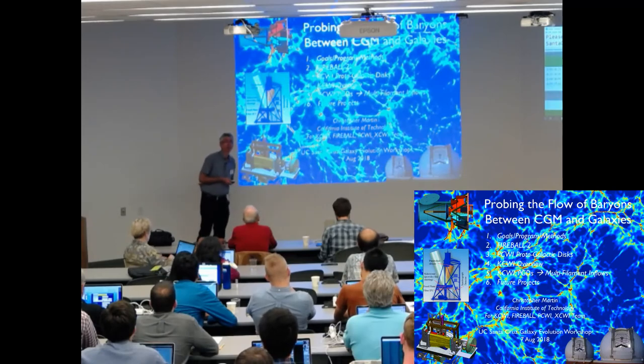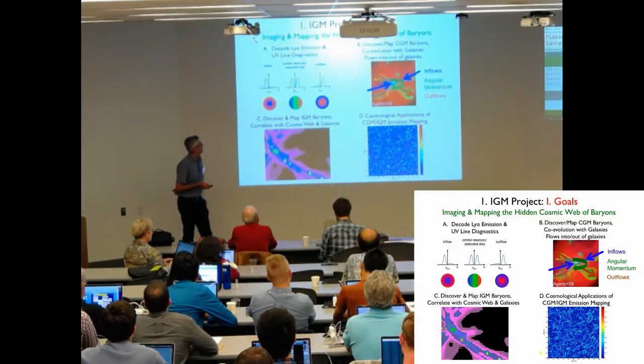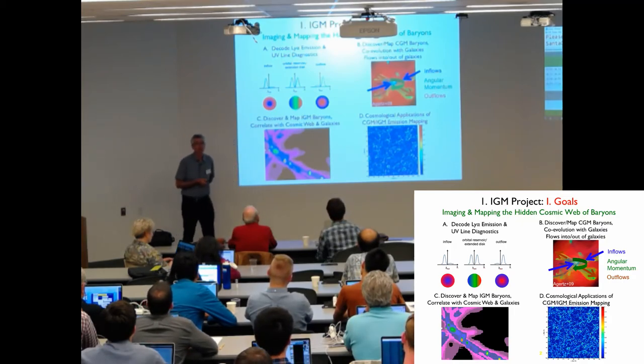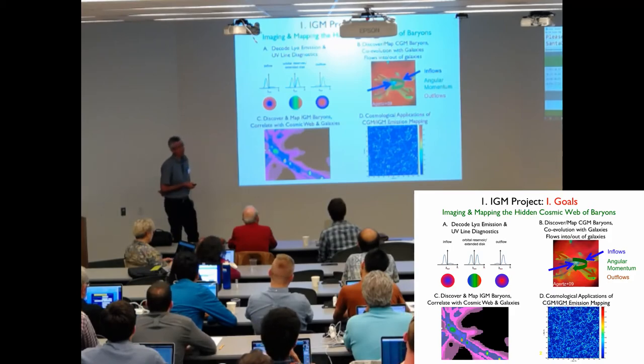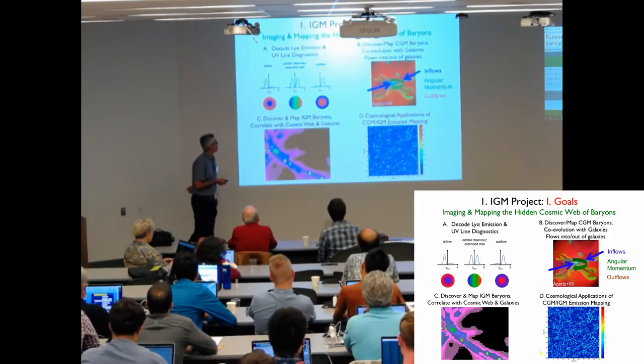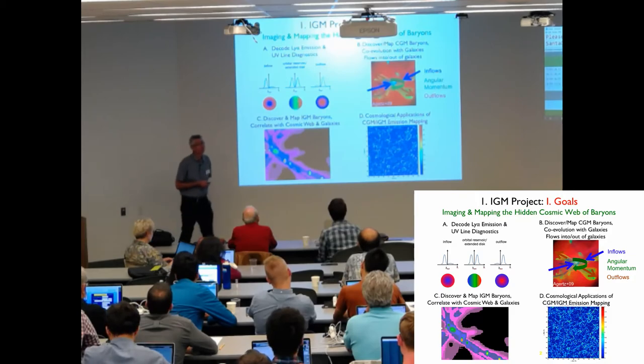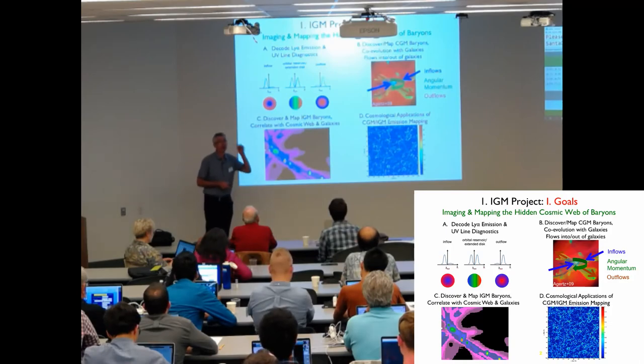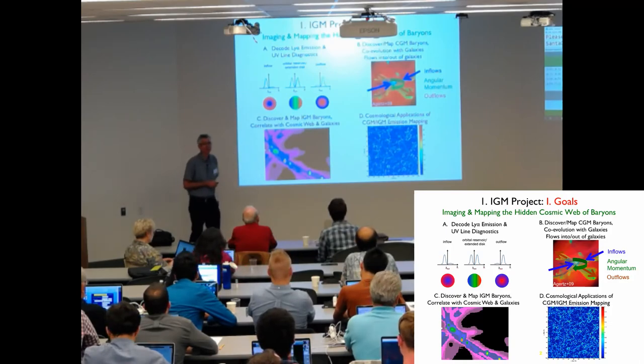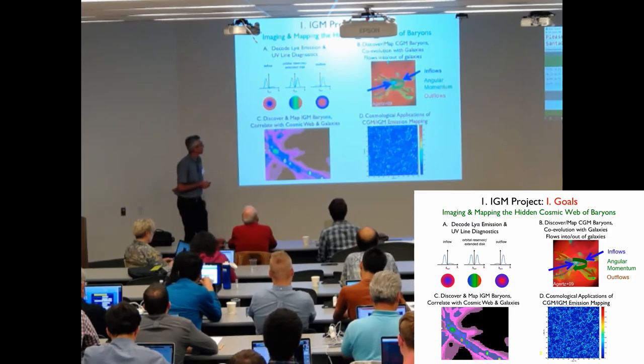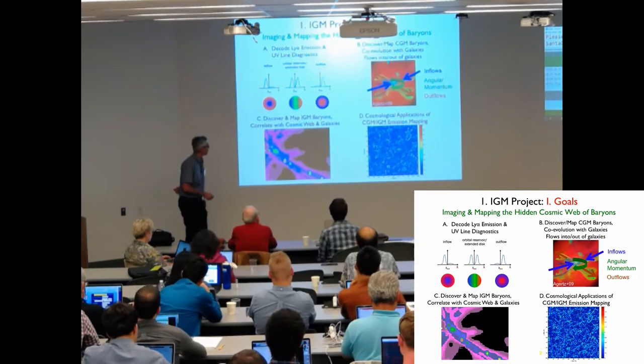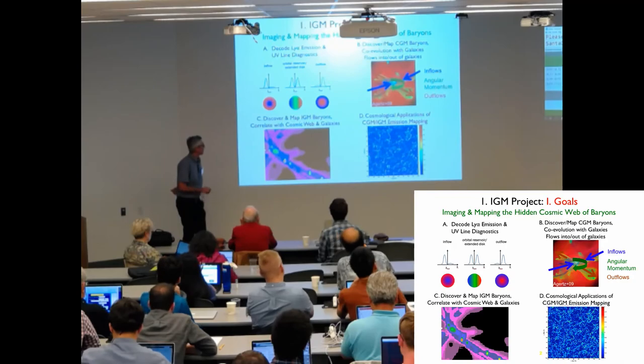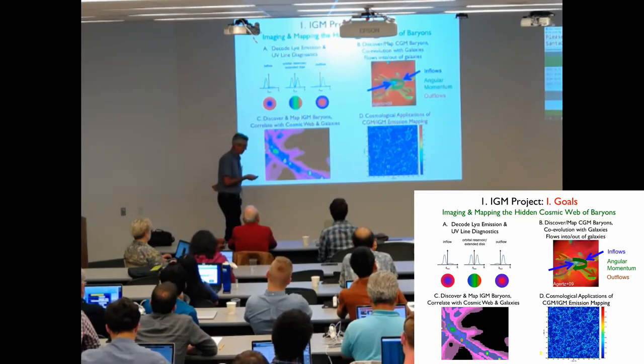In particular, results from the Keck Cosmic Web Imager. I see this as a long-term program. In order to use Lyman-alpha, which is the brightest emission line, and that map was a Lyman-alpha map, we first need to understand it, and in particular understand radiative transfer. Then we can use it to understand the flow of baryons in the circumgalactic medium, and to try to relate those flows to the evolutionary state and history of galaxies. Ultimately, we will link them with the distributed cosmic web and begin to make maps that ultimately could be used for cosmological investigations.